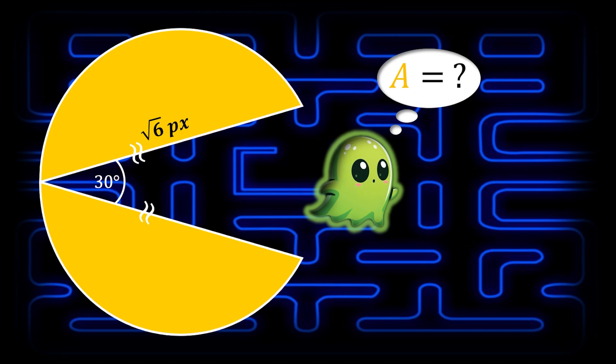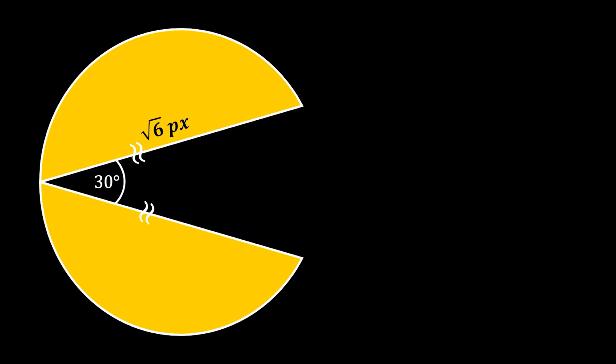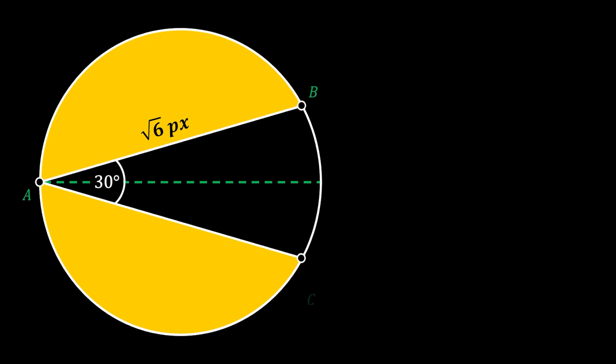Let's solve this Pac-Man problem. We're going to start by completing the circle, and then pull the line of symmetry, since we know that the length of its upper and bottom jaw is identical. Let's mark the characteristic vertices as A, B, and C, and mark the center of our circle as O. We'll pull a line from O to B and from O to C.